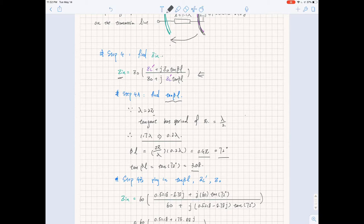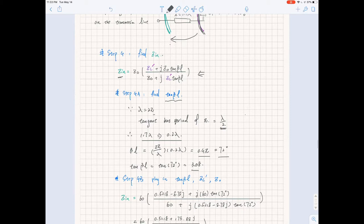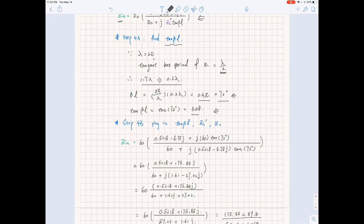Because lambda is equal to 2 pi and tangent has the period of pi, which is equal to lambda over 2, so 1.7 lambda can be simplified into 0.2. Beta l turns out to be 72 degrees, and tangent beta l has the value of 3.08. Now we have all the values that we need to plug into the equation for calculating Zin.